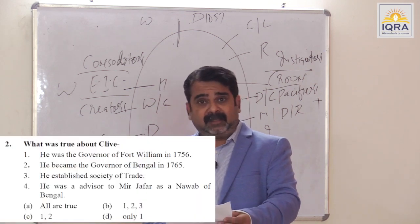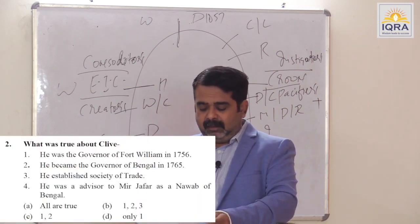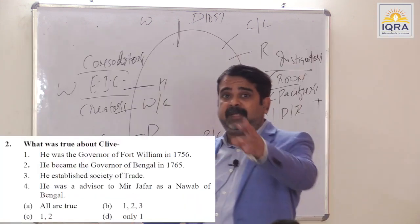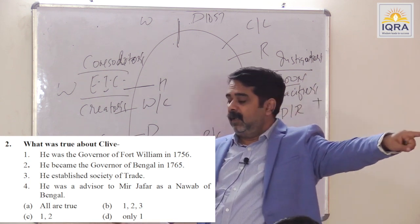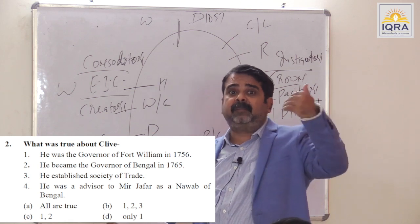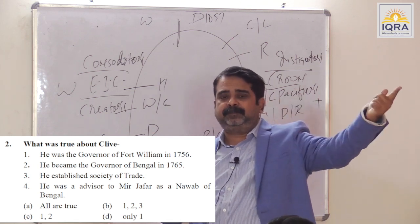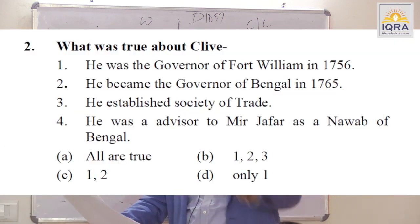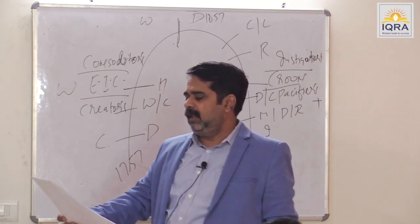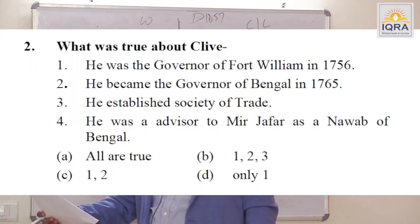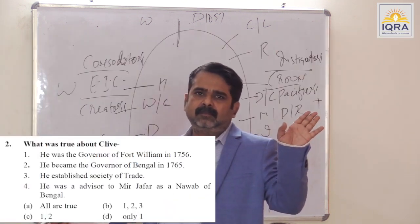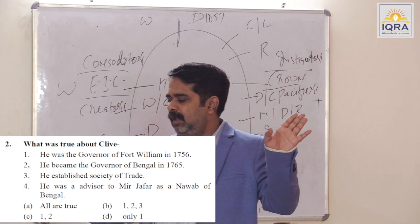What was true about Robert Clive? He was the creator. He was the Governor of Fort William in 1756. He was given a prize for his achievement in Carnatic. He became Governor of Bengal in 1765. He was recalled back after Buxar. He established a Society of Trade to handle the menace of Dastak. He was an advisor to Mir Jafar as Nawab of Bengal — officially not. Answer is B.